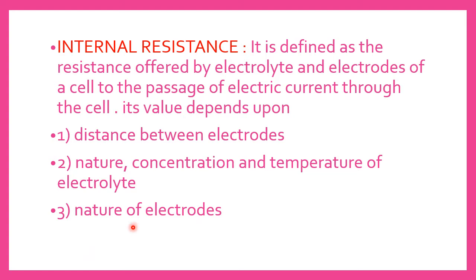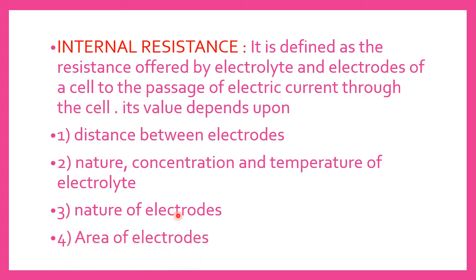It also depends upon the nature of the electrodes — which material the electrodes are made of — and the area of the electrodes. For example, where you have a carbon rod, the area of the electrodes matters. So, remember three points for electrodes: distance between electrodes, nature of electrodes, and area of electrodes. For the electrolyte, one key set of factors is nature, concentration, and temperature of the electrolyte. You can make six points in total.